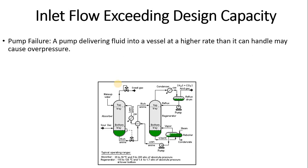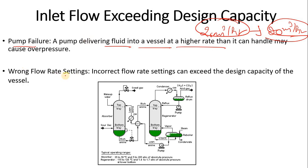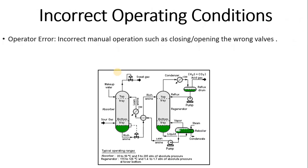Inlet flow exceeding design capacity is another cause. If your system is designed for 20 m³/hr but is running at 30 m³/hr, system or pump failure can result. A pump delivering fluid into a vessel at a higher rate than it can handle may cause over-pressure. Wrong flow rate settings can also be a contributing reason.